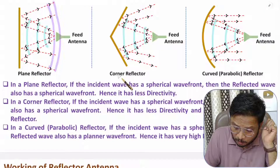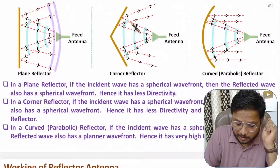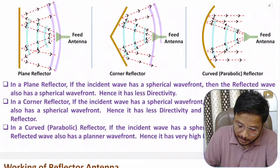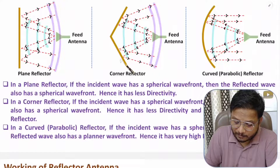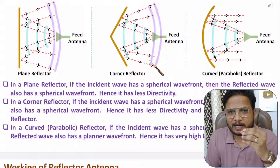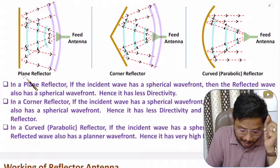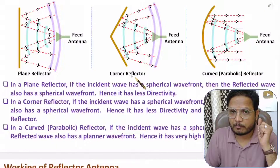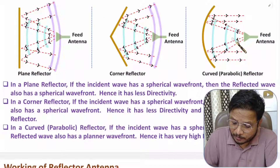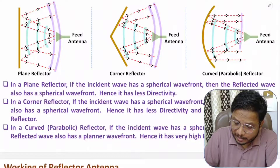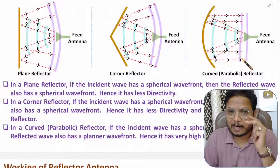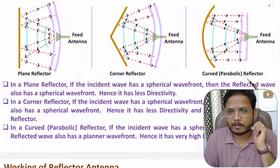With the corner reflector, after reflection there are also spherical wavefronts, giving lower directivity — though slightly higher than the plane reflector. That's why we don't use the corner reflector either. However, with the parabolic reflector, if the incident wave has spherical wavefronts, the reflected wave will have planar wavefronts, giving it highly directional characteristics.